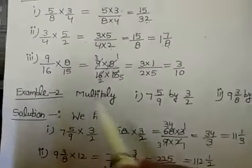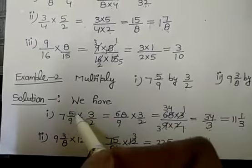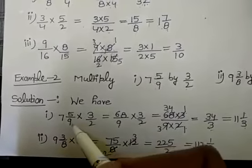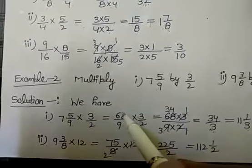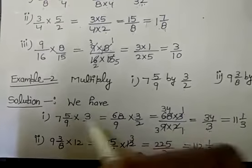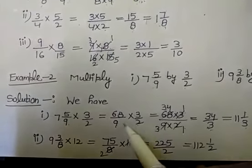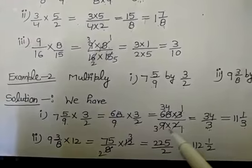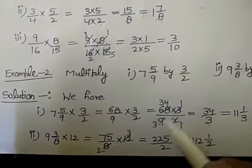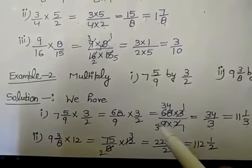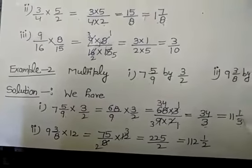Now let's move on to the next example. Example number 2 — multiply 7 whole 5 by 9, multiplied by 3 upon 2. Since 7 and 5/9 is a mixed fraction, we convert it to an improper fraction: 7 nines are 63, plus 5 equals 68 upon 9. Now multiply 68/9 by 3/2: product of the numerators 68 into 3, upon product of the denominators 9 into 2. Reducing by common factors — 2 divides 2 and 68 giving 34; 3 divides 3 and 9 giving 1 and 3 — so we get 34 upon 3. Since it is improper, we convert to mixed: the answer is 11 whole 1 upon 3.